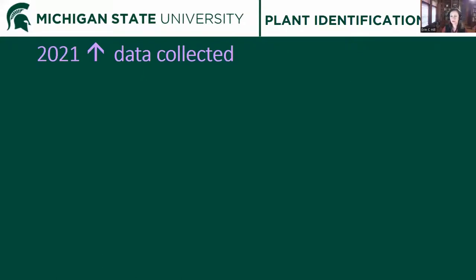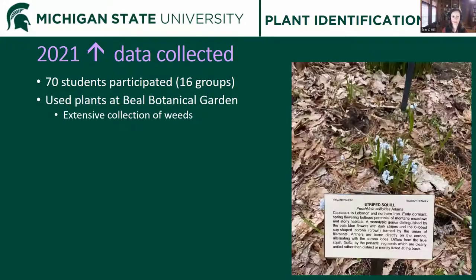We had 70 students participate in the test instead of just me, in 16 different groups across course sections. Since students are just learning to identify plants and I don't always trust they know exactly what the plant is, we went to Beale Botanical Garden here on campus, which has a very extensive collection of weeds — all labeled with both common name and scientific name (genus and species), so students knew what plant they were comparing to what the apps were telling them.